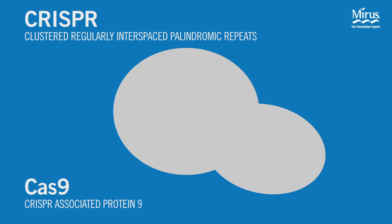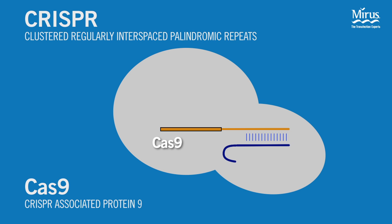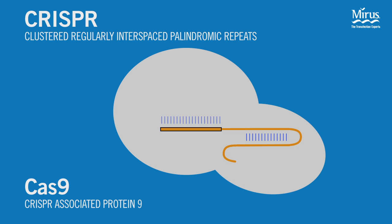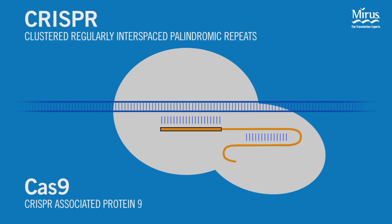The CRISPR-Cas9 system consists of the Cas9 endonuclease and a guide RNA. The guide RNA can be supplied as a two-part complex consisting of CRISPR-RNA and tracer RNA, or as a single chimeric oligonucleotide. Using the sequence provided in the guide RNA, the Cas9 complex binds to the specified target in the genome.